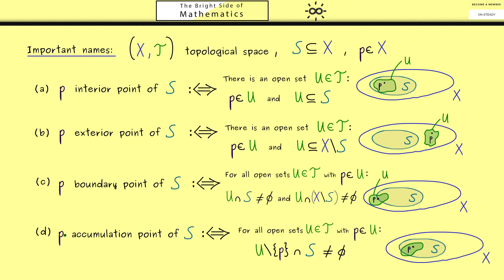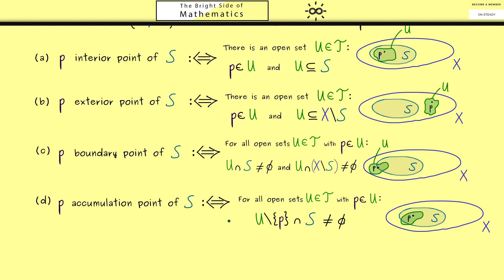For this reason, you immediately see an exterior point can never be an accumulation point. So here we have 4 important names for points that are defined with respect to a chosen subset S. Therefore, I would say please remember them.